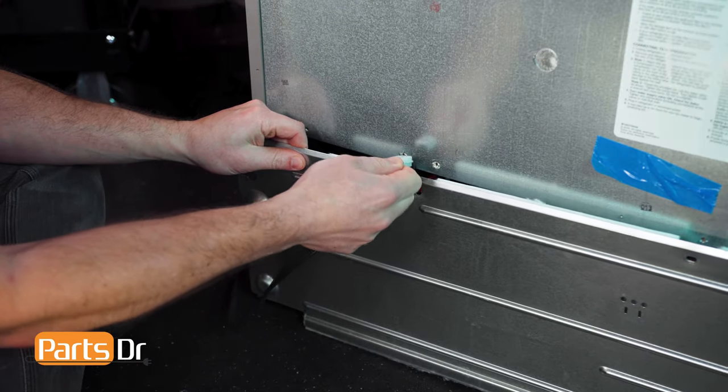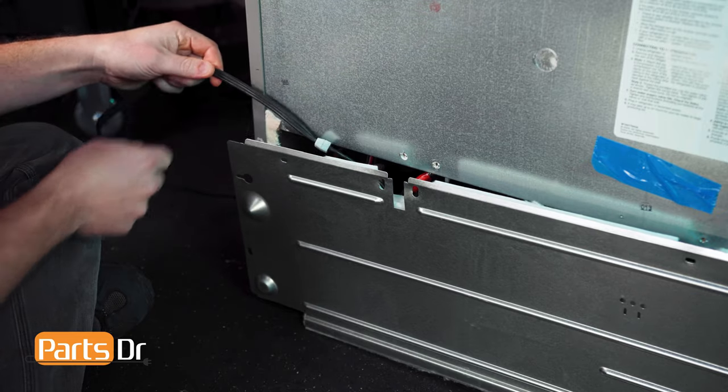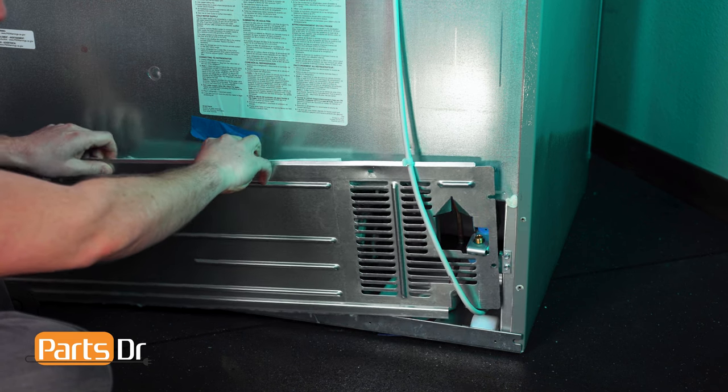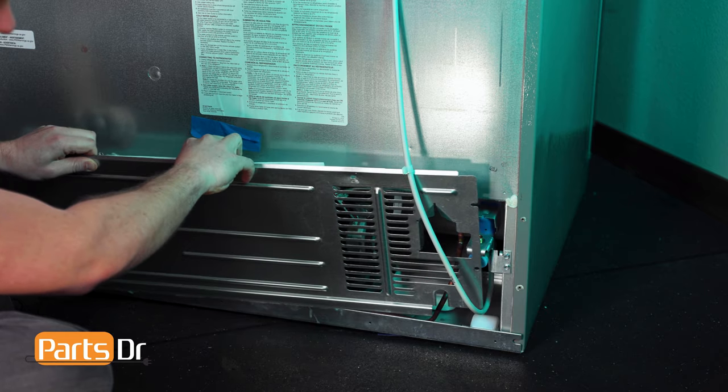Slide the power cord out of the retainer slot. Then pull the back cover away from the fridge. Be careful as the water line is routed through a groove on the bottom right corner.